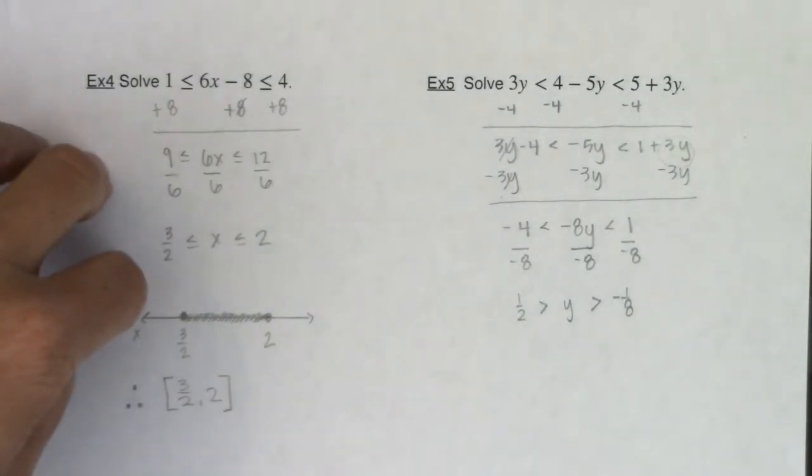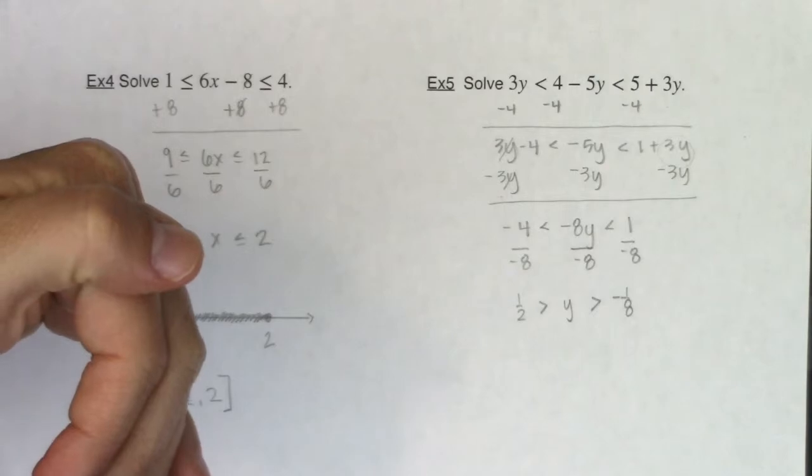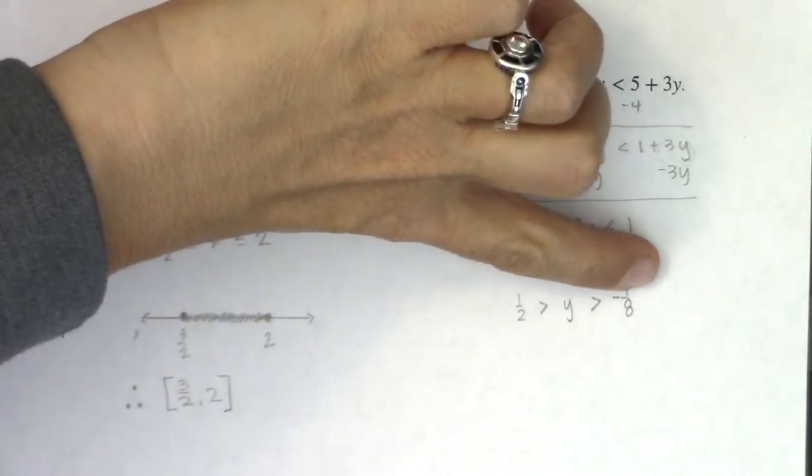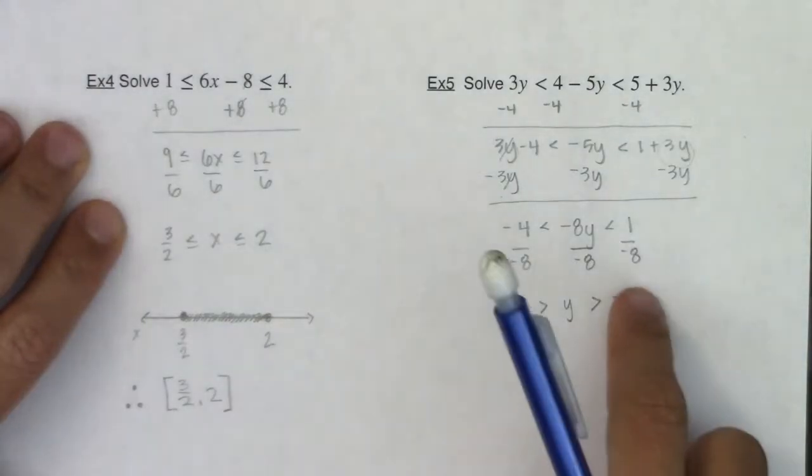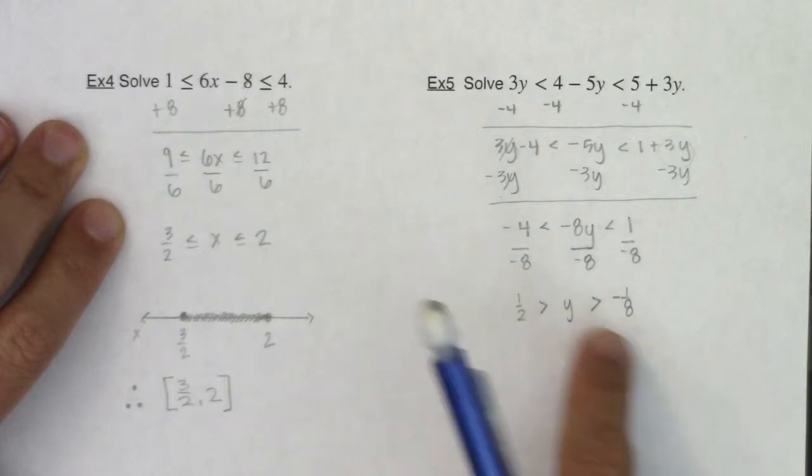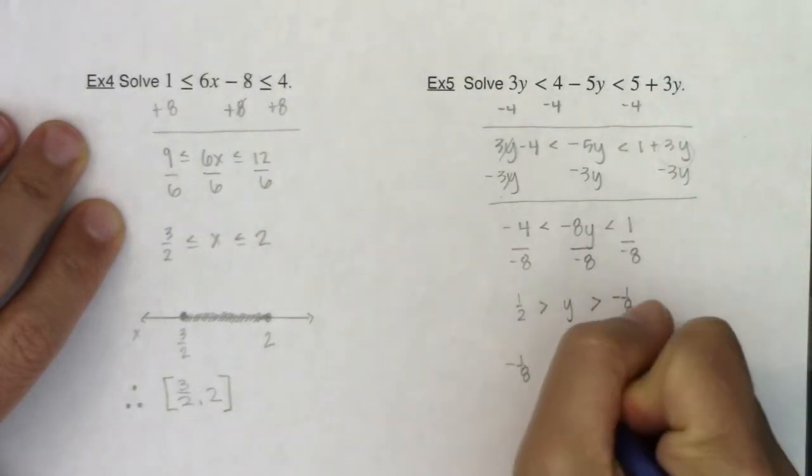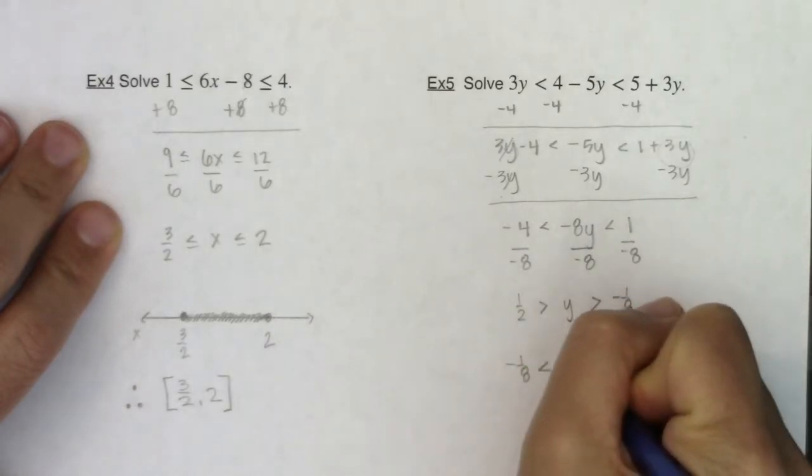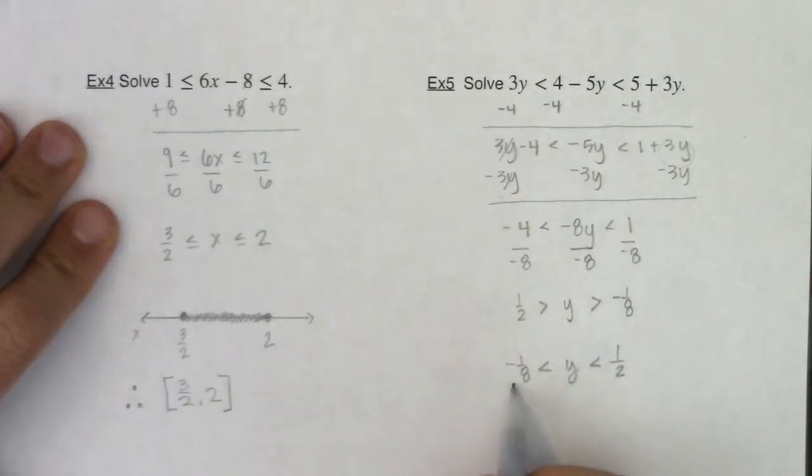Now this is a little funky to look at because typically we have our lower numbers on the left side of our inequality and negative one eighth is a smaller number than positive one half. So what I want to do is move the negative one eighth to this side of the inequality, the positive one half to that side of the inequality, and I'll keep y where it is. Now when I change where these numbers are based, I'm going to change the direction of the inequality.